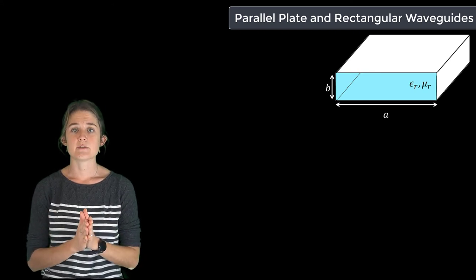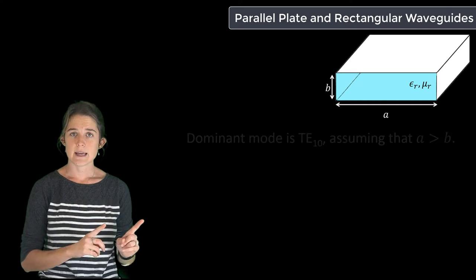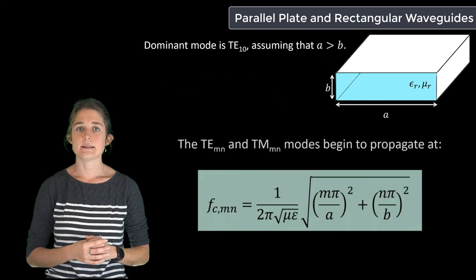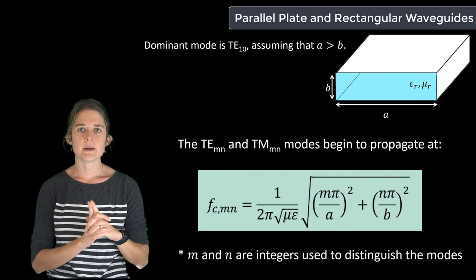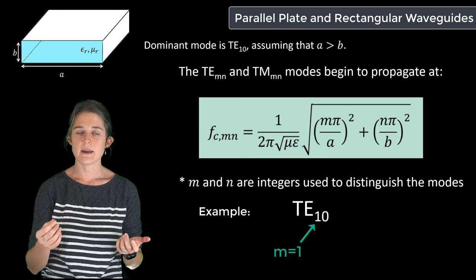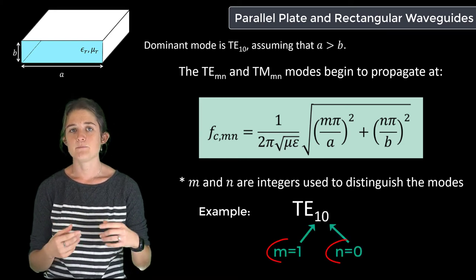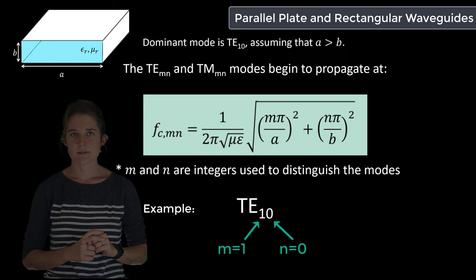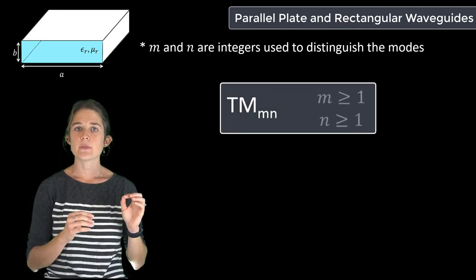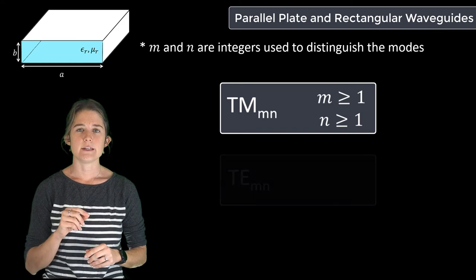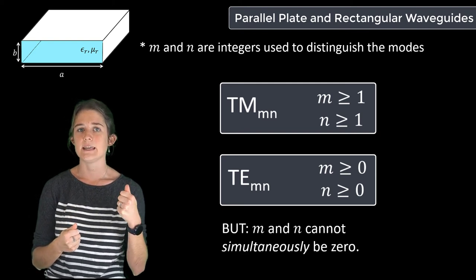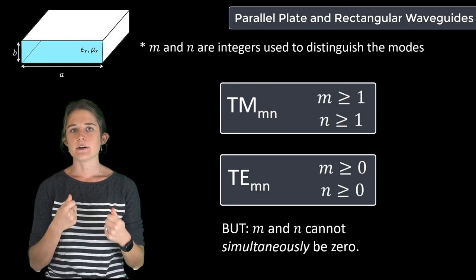No single conductor transmission line is capable of supporting TEM propagation, so the dominant mode on a rectangular waveguide is the TE10 mode, assuming the a dimension is larger than b. Both TE and TM modes have cutoff frequencies given by this equation, where m and n are integers used to distinguish the modes. For the TM mode, both m and n are greater than or equal to 1. For the TE mode, both m and n are greater than or equal to zero, except they are not both allowed to be zero simultaneously — so there is a TE10 and TE01 mode, but no TE00 mode.